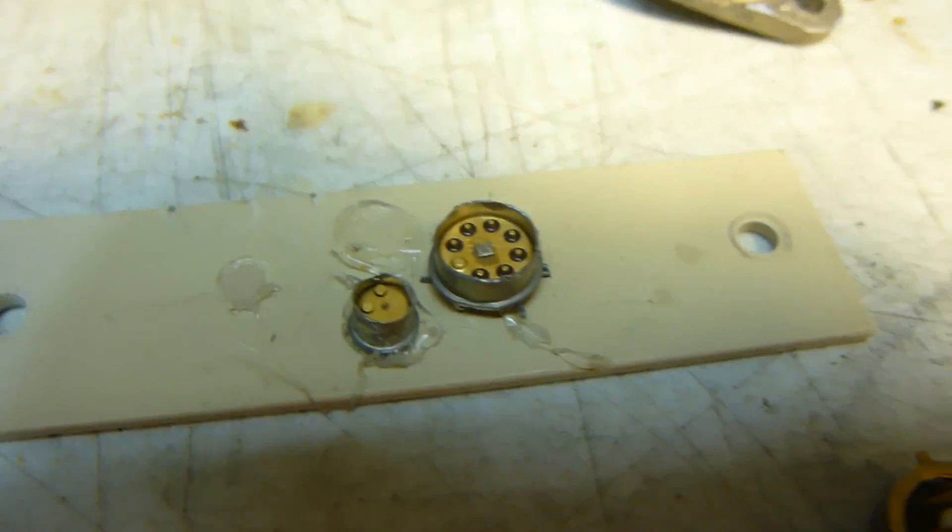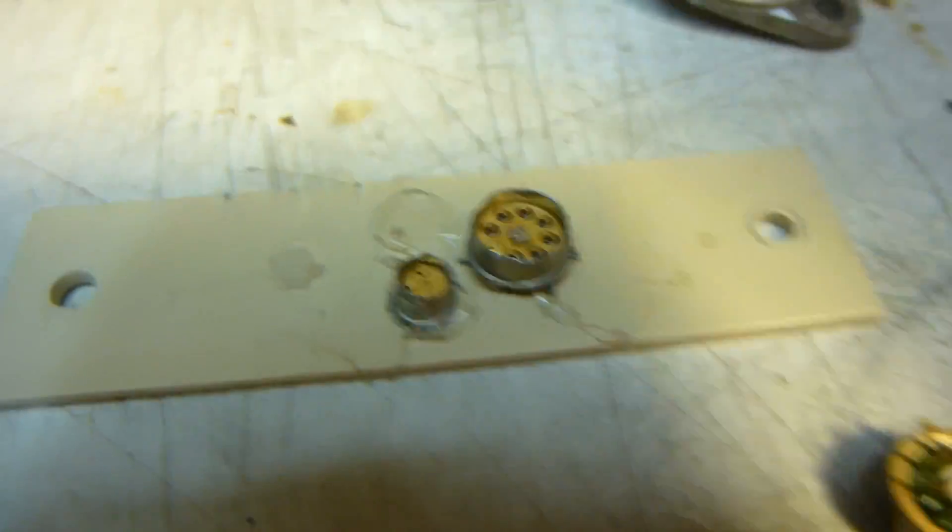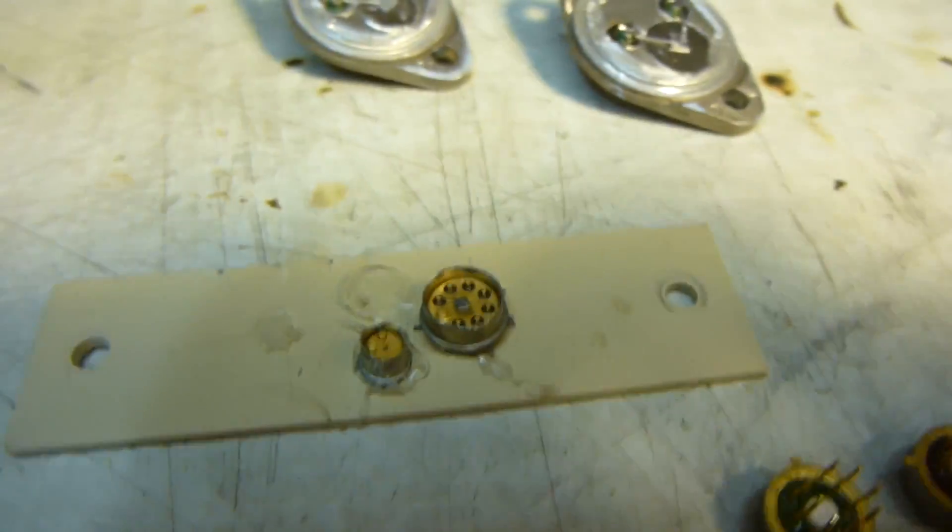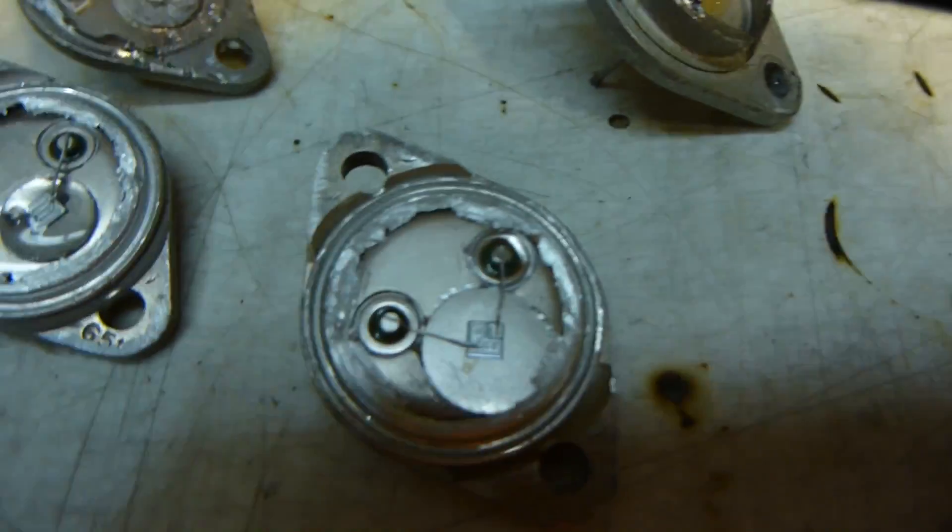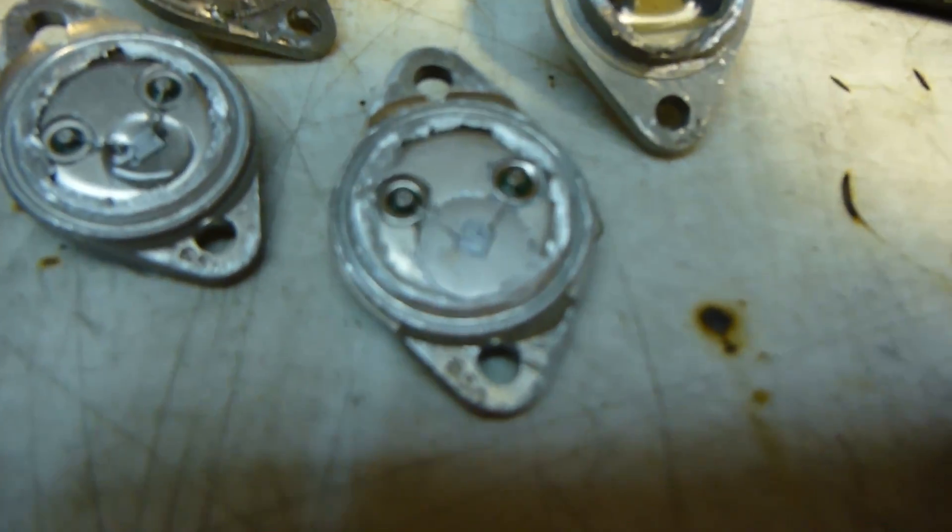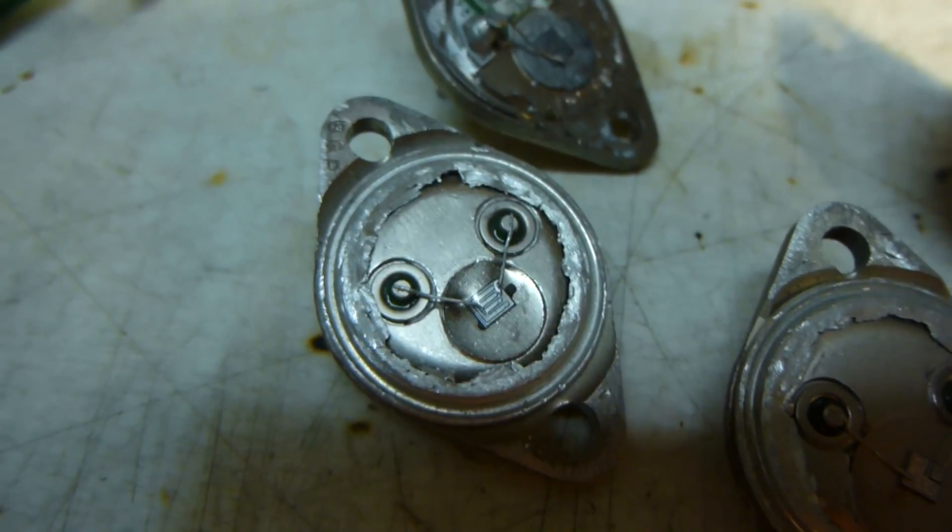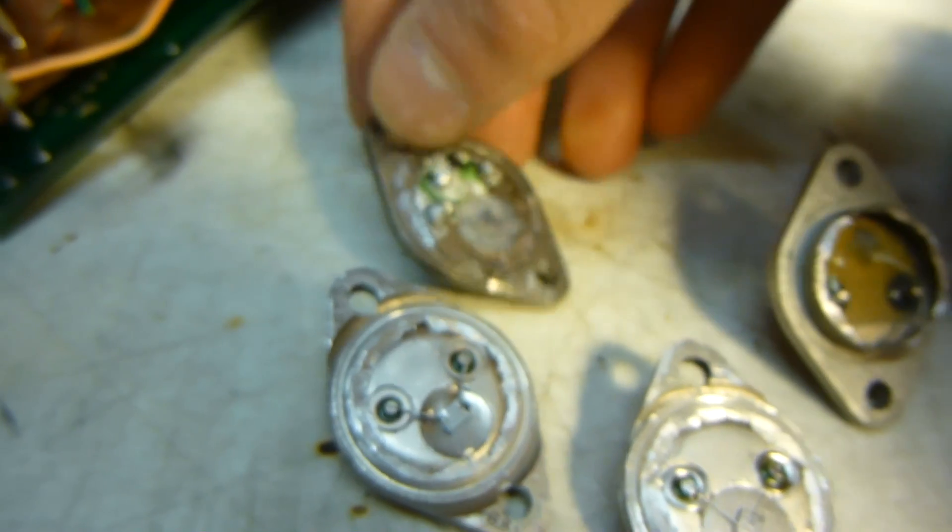And then here I actually cut one open just to see what it looks like inside. So an IC and a transistor. I was gonna put them under the microscope, but it doesn't work very well with the camera. And here's some like 2N3055 transistors and such. They were burned out so I cut them open.